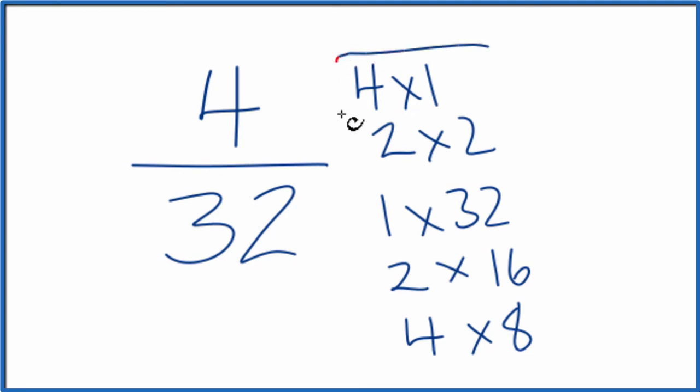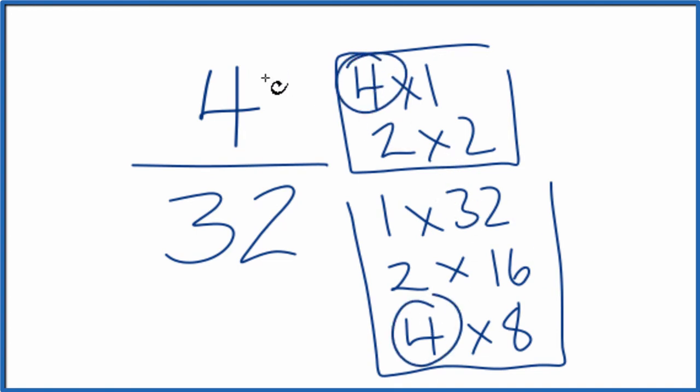So if we look at the numerator here and then the denominator down here, we see that the only common factor, or the largest common factor, is 4. So we divide the numerator and denominator by 4.